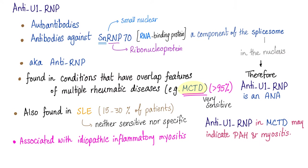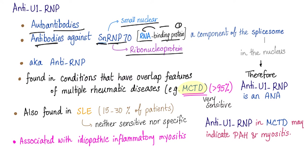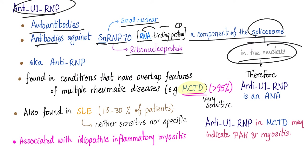Now, today's topic: anti-U1 RNP antibodies. They are antibodies against the self — specifically against SNRNP70. SN stands for small nuclear, RNP stands for ribonucleoprotein. These are RNA-binding proteins, meaning proteins that bind to RNA, and they are a component of the spliceosome in your nucleus. Since this is located in the nucleus, anti-U1 RNP is a subtype of anti-nuclear antibody.